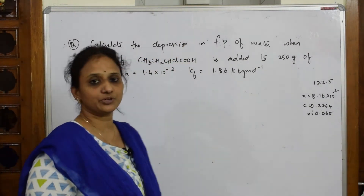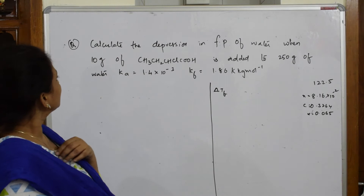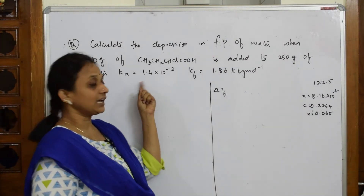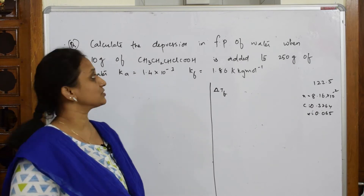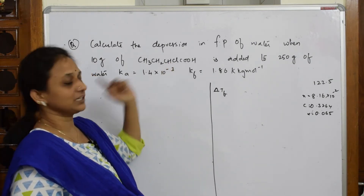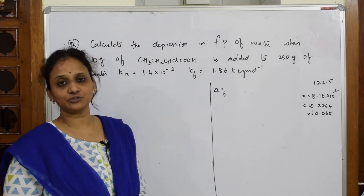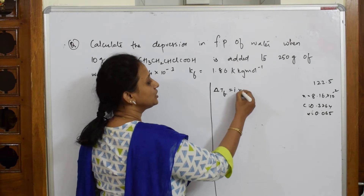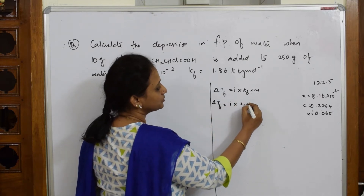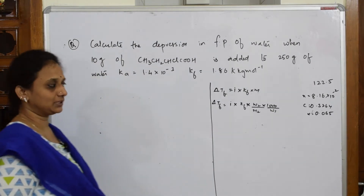We have to calculate the depression in freezing point, that is ΔTf. The formula is ΔTf = i × Kf × molality, where molality = (w2 / M2) × (1000 / w1). Ka (acid dissociation constant) is also given, so we'll need to use the van't Hoff factor i.